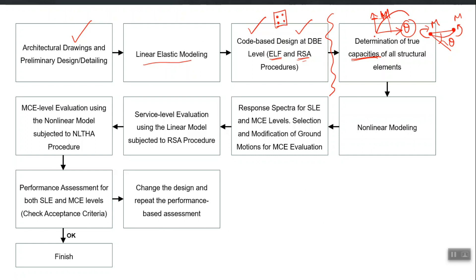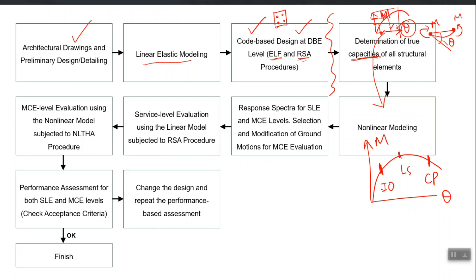From the final design you construct the actual m-theta curve for the column — you know the moment at which it will yield, the moment at which it starts cracking, and the moment at which it is completely damaged, along with corresponding theta values. You give this curve as input in the non-linear model and define three or more markers on that curve: IO (Immediate Occupancy), LS (Life Safety), and CP (Collapse Prevention) — or cracking, yielding, and ultimate. The program then has the complete capacity curve and the three acceptance criteria.